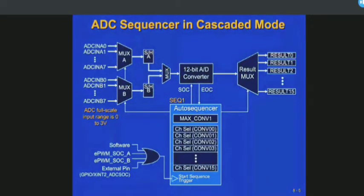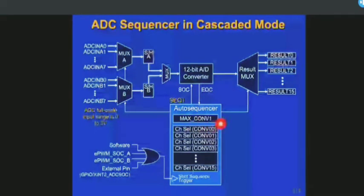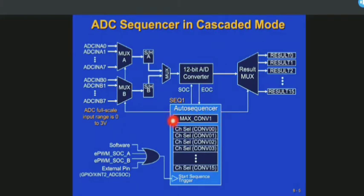This is the architecture of the ADC in cascaded sequential mode. In cascaded mode, this is the auto sequencer for sequence one. Before starting the auto sequencer, you have to select the maximum conversions - how many input channels you want to convert into the digital domain. Based on maximum conversion, you can select your number of inputs. For example, you may have two analog inputs like voltage and current, or six inputs for three-phase systems with three voltages and three currents.